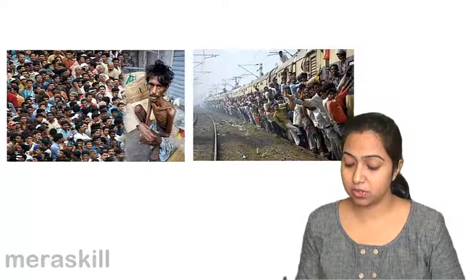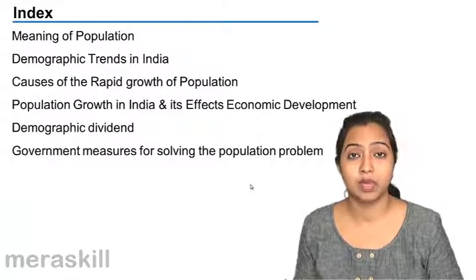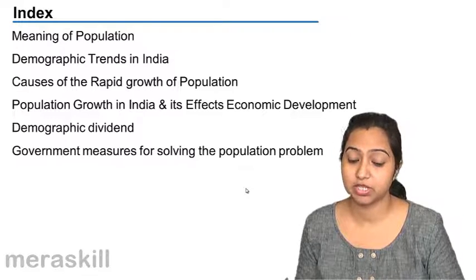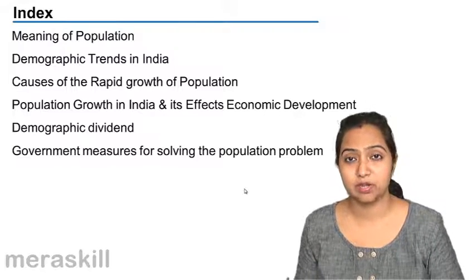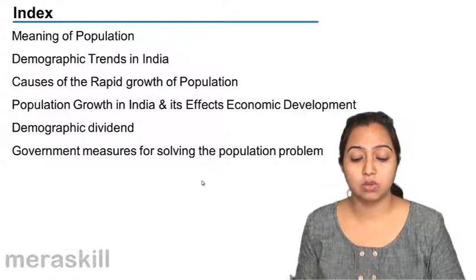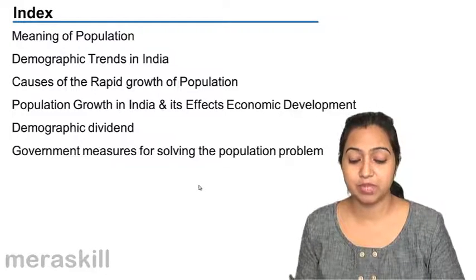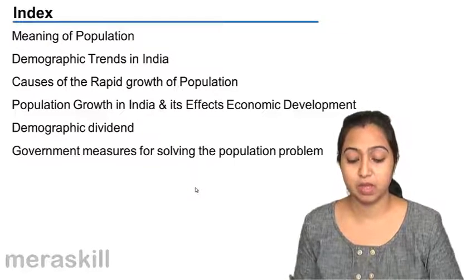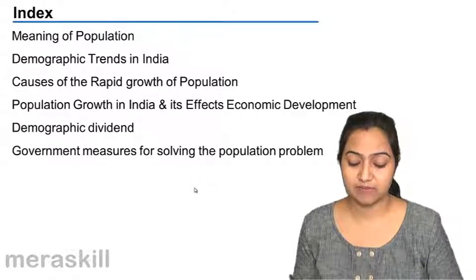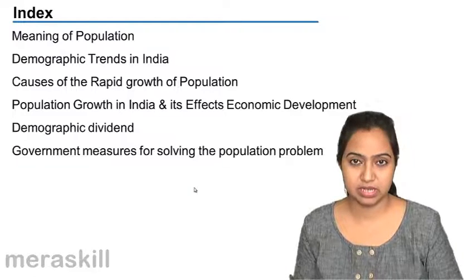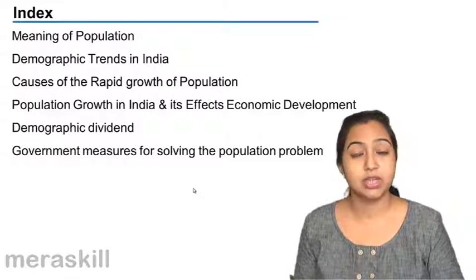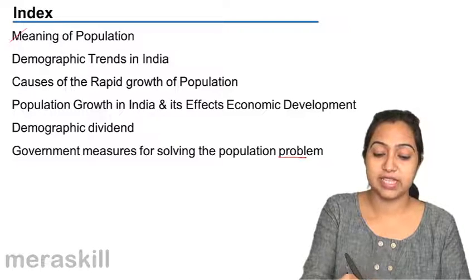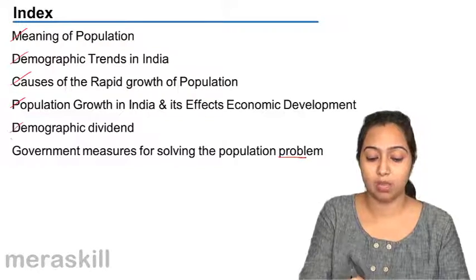So now let us talk about what we are going to study in the chapter. We will talk about the meaning of population and understand what it actually means. What type of population should be there for an economy — big or small? What are the demographic trends in India in the past six decades? What are the causes that population has grown so rapidly? Population growth in India and its effect on economic development. Demographic dividend — what does it mean? And the measures that have been taken by the government for solving the population problem. All these things we are going to take up one by one.